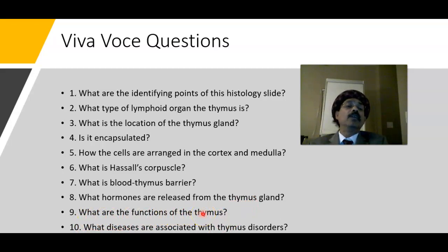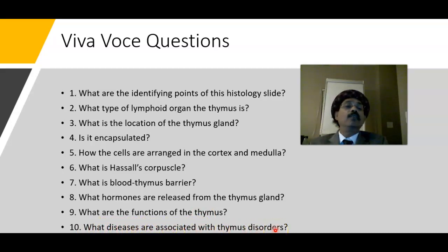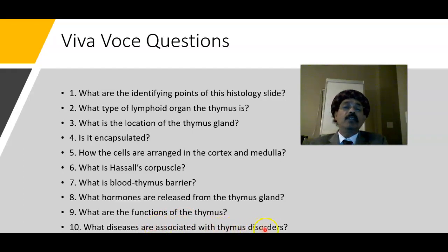The thymus is the site of T lymphocyte production, associated with body defense and cell-mediated immunity. Diseases associated with thymus disorders include thymic hyperplasia, thymoma — which is associated with myasthenia gravis — and DiGeorge syndrome, caused by non-development of the thymus gland, leading to chronic infection in children and decreased longevity.